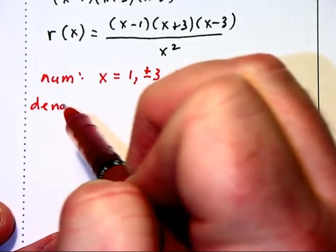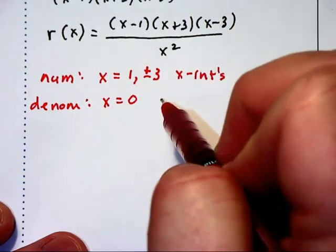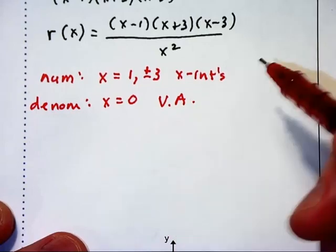Looking at the denominator, we see that at x equals 0, also known as the y-axis, we will have a vertical asymptote.